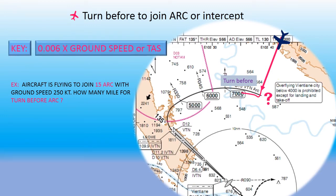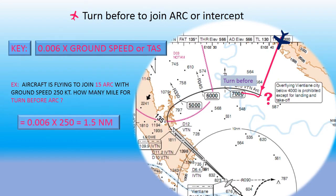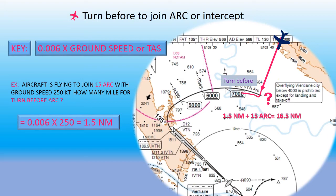The key is: 0.006 multiplied by ground speed or true airspeed. Sometimes you can multiply by indicated airspeed also, because during approach at low speed, ground speed and true speed are quite similar — not very different — since during a turn to arc you have already reduced speed. Refer to the example: 0.006 multiplied by 250 knots equals 1.5, which is the turn-before-arc distance. So 1.5 plus 15 DME arc equals 16.5, which is the point to turn to join the 15 DME arc. This is very accurate and good to use in real flight.